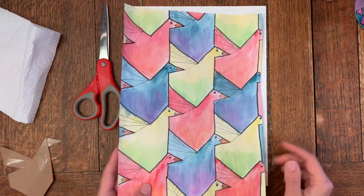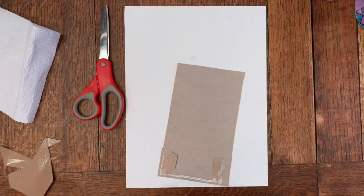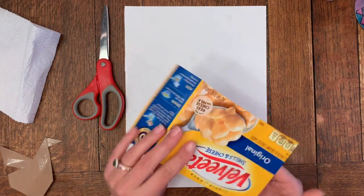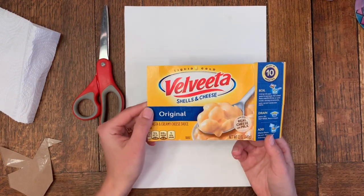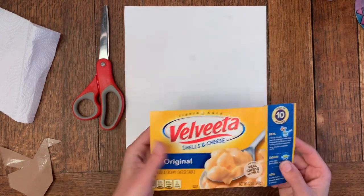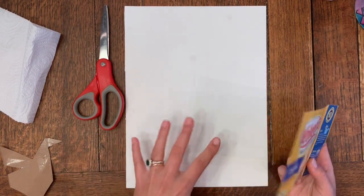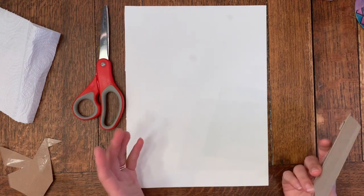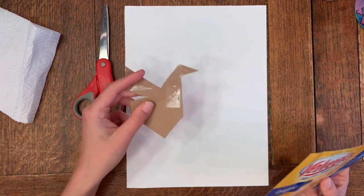What you're going to need to get started is a piece of thin cardboard. I'm using the back of this Velveeta mac and cheese box - you could use a cereal box. If you don't have anything cardboard, just another piece of paper will work fine. We're going to be using this cardboard to make our shape.